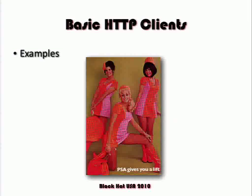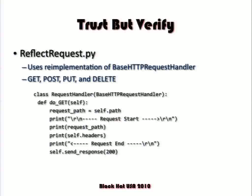When you start constructing clients, making changes to headers or content, you might want to see what the server would see. I wrote a little tool called Reflect Request — it's in the zip file. Any GET, POST, PUT, or DELETE you send to it, it echoes directly back to you. I wrote it when writing MonkeyFist for last year's Black Hat — I needed a way to see what the server saw from my CSRF attacks. It's basically just HTTP TRACE, but in Python, four lines.